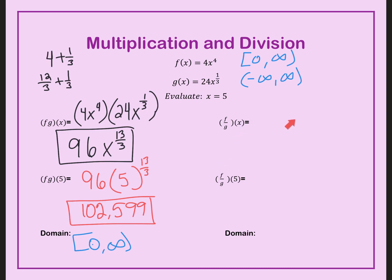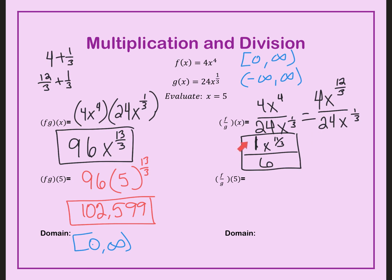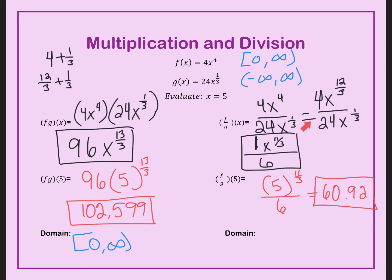Now try the division. Set it up first before plugging in. Check: 4 over 24 is 1 over 6, and with the exponents, use the common denominator and subtract them. Plug in 5 and check your answer. For the domain — it has to be part of both, but the denominator cannot equal zero. The answer is zero to infinity with parentheses, because x cannot be zero. If I plug in zero, zero to the 1 third is zero, zero times 24 is zero, and I cannot divide by zero.